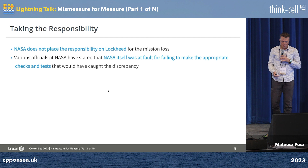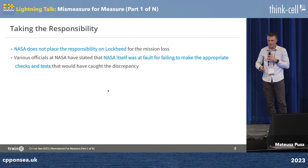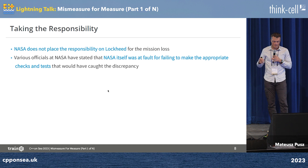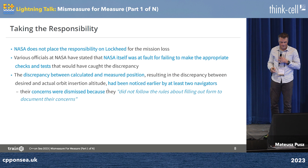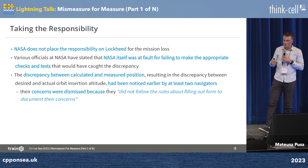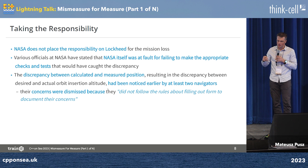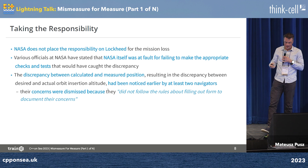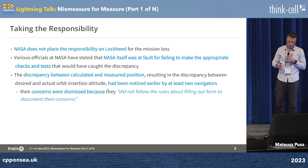About responsibility — Lockheed was not blamed for this. NASA said it was their fault because they didn't test the system properly and didn't find this issue during unit testing. What's actually interesting is that they knew about the problem earlier; it was noticed by at least two navigators that the actual position didn't match the calculations, but officially the concerns were dismissed because they did not follow the rules about filling out a form to document their concerns.